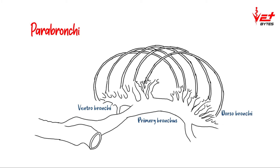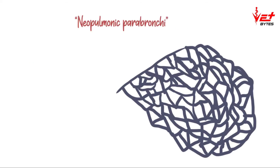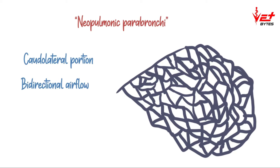The tertiary bronchi from the dorsal branches run parallel to the ventral branches. This parallel-running parabronchi is called paleopulmonic parabronchi, and air flows in the paleopulmonic parabronchi in a single direction. This paleopulmonic parabronchi is present in all species of birds. There is another type called neopulmonic parabronchi, present in the caudolateral portion of the lungs, where air flows in both directions.